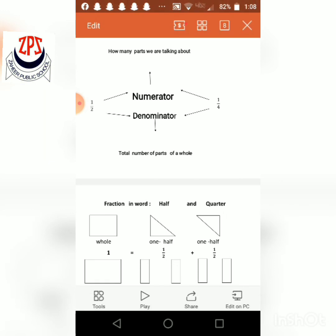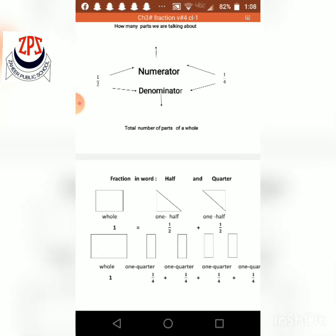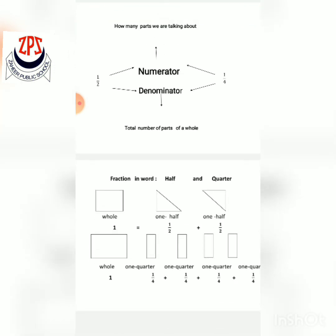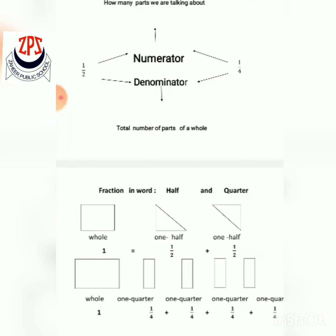Now an example of half: a rectangle divided into two equal parts — one upon two plus one upon two equals one whole. For quarter: a rectangle divided into four equal parts — one upon four plus one upon four plus one upon four plus one upon four equals one whole. These four quarters make a whole.